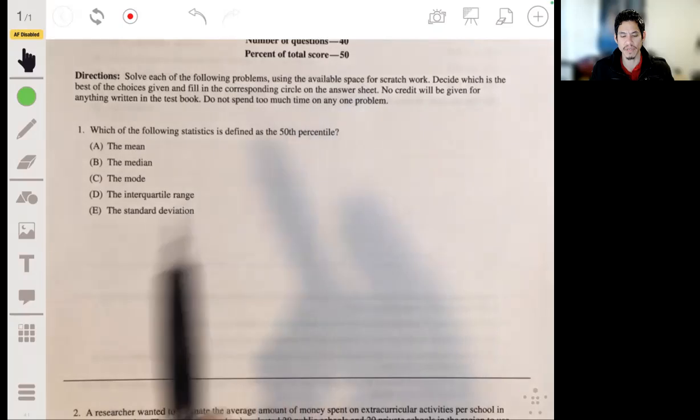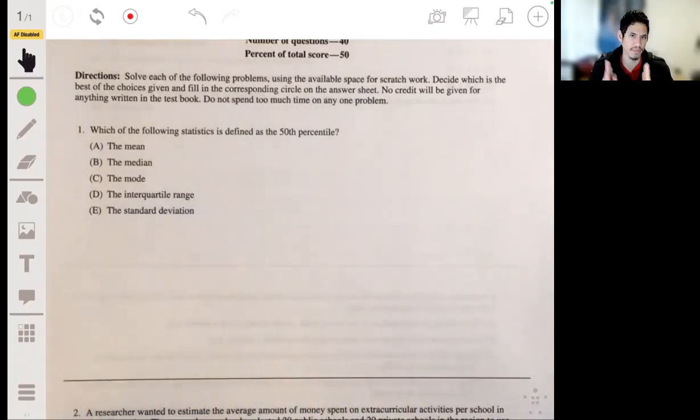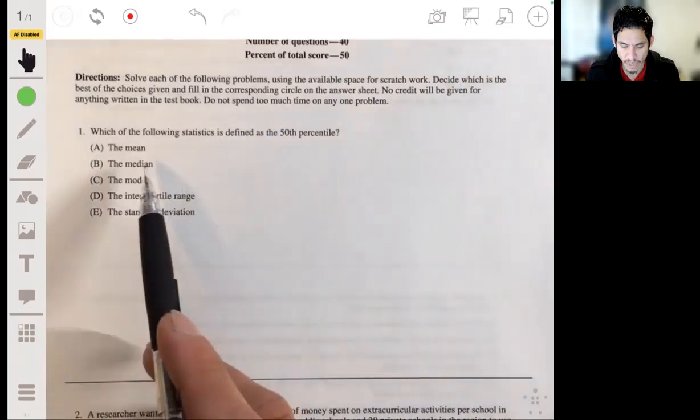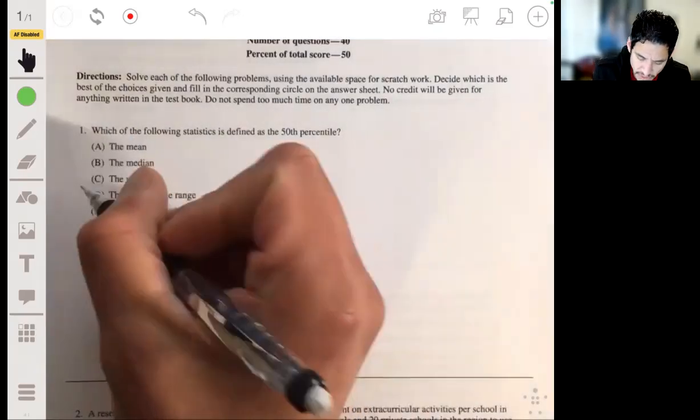By that we mean the equal areas point where there's 50% of the area to the left and 50% area to the right, or 50% of the area is greater than or less than this point here in the dataset. So it's B.